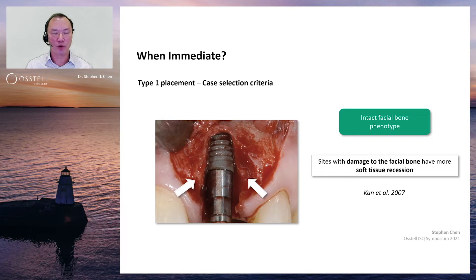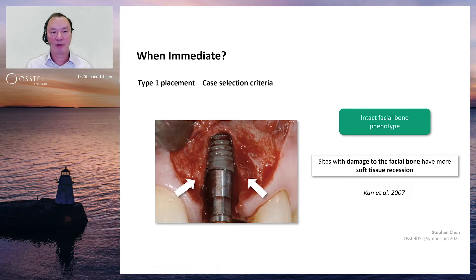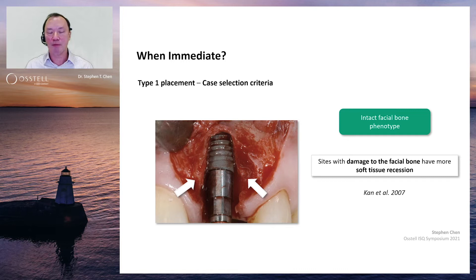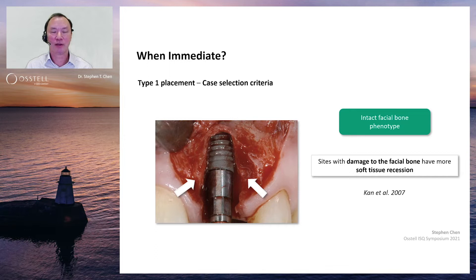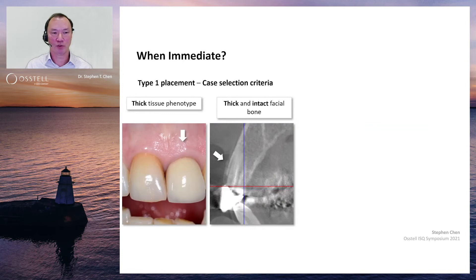Another aspect is the condition of the facial bone wall of the socket — whether it is intact or has been damaged by fenestration or dehiscence. A 2007 study by Joe Kahn showed clearly that with a dehiscence of the facial bone, even with grafting and GBR procedures, there is a much greater chance of soft tissue recession within the first 12 months. The greater the damage to the facial bone wall, the greater the risk of recession. Therefore, the inclusion criteria recommend selecting cases with an intact facial bone.